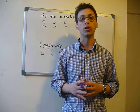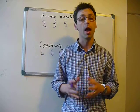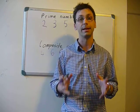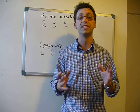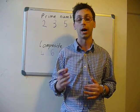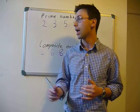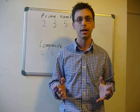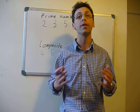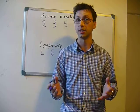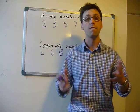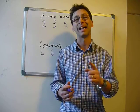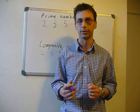Just go through the definition one more time. A prime number is a number that is divisible by itself and one. And a composite number has more than one factor. For instance, the number ten: five times two equals ten, and ten times one equals ten.